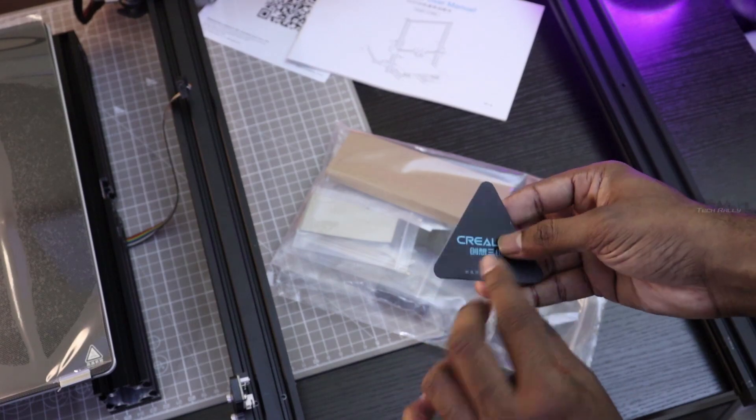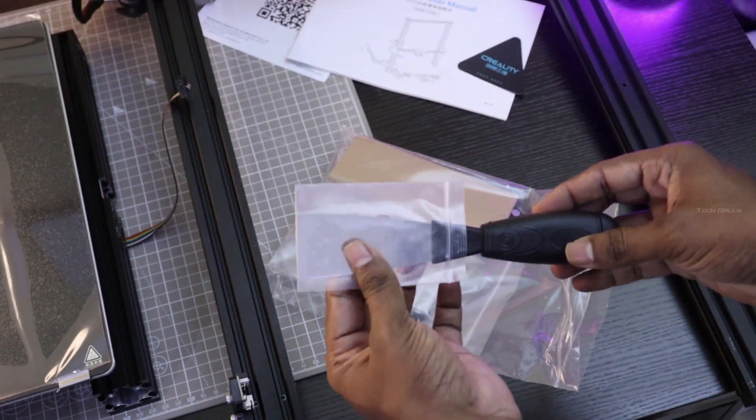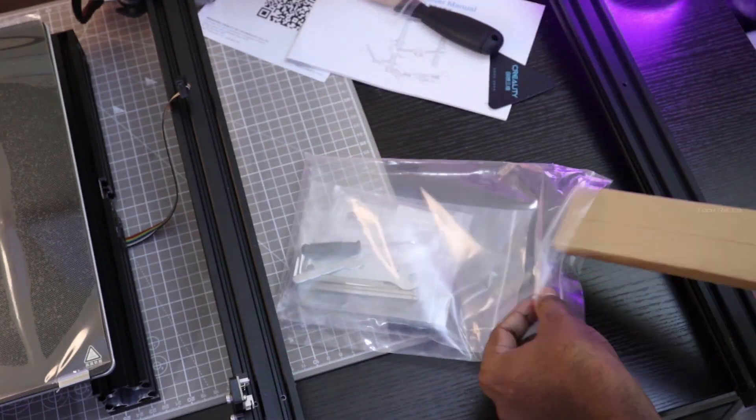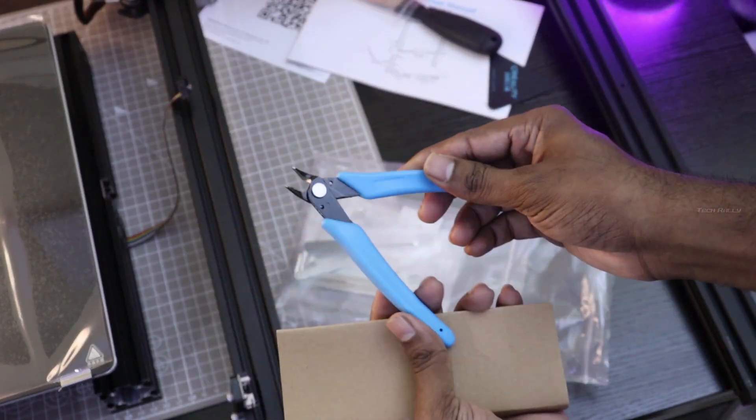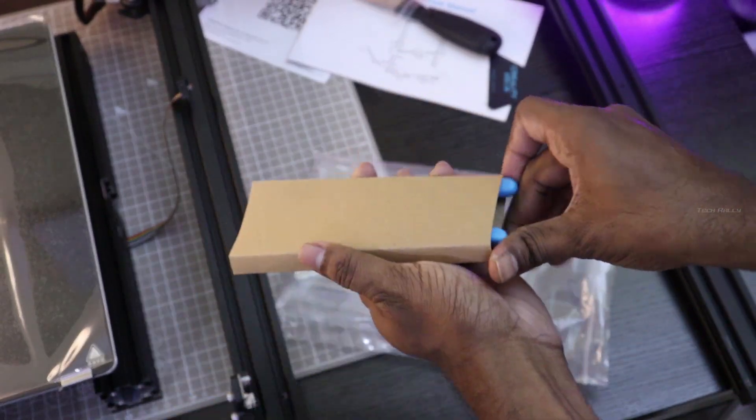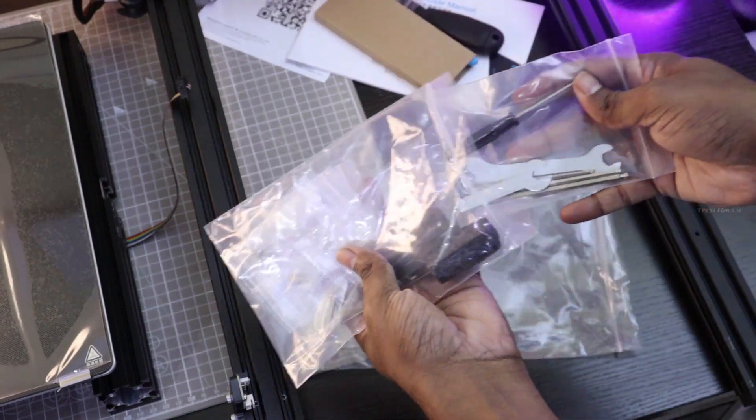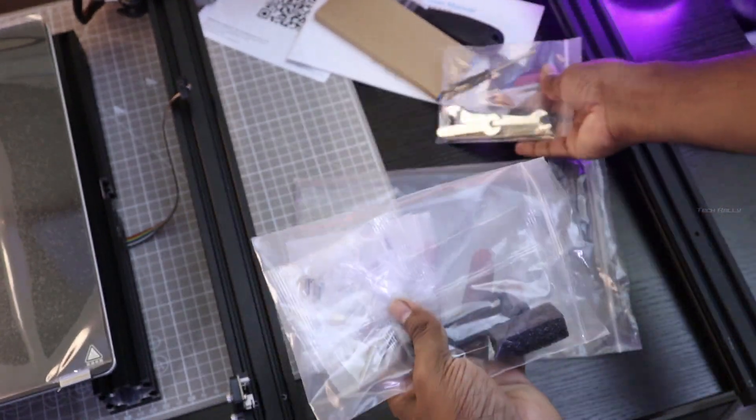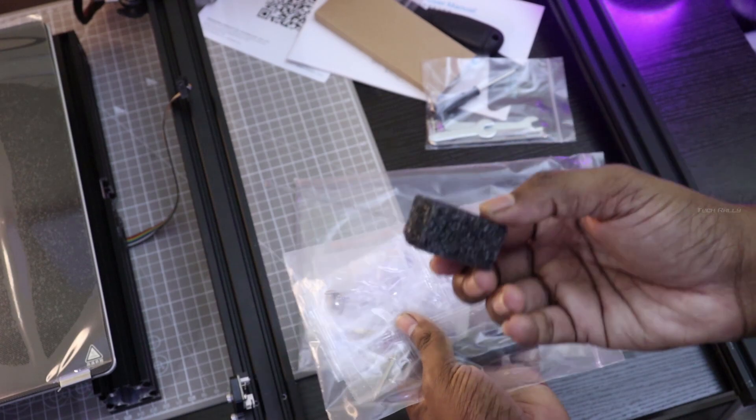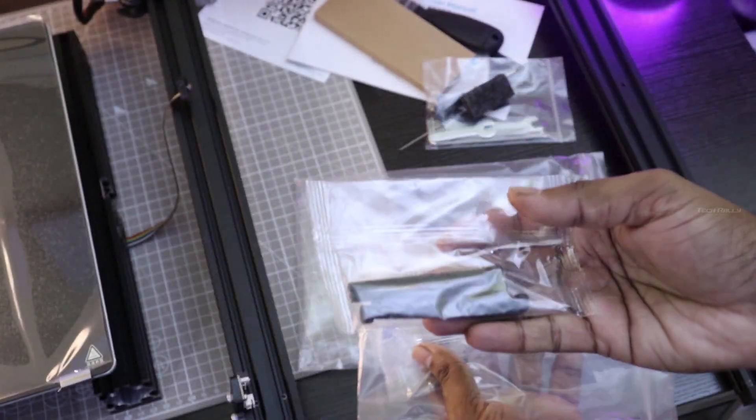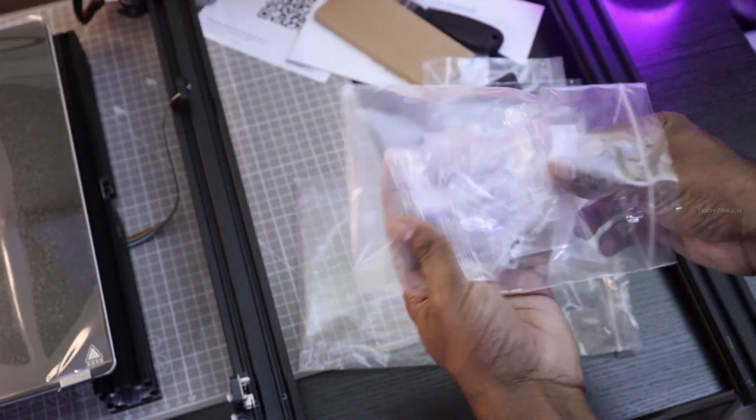Inside this pack, we have the installation guide and a scraper, a cutter, some tools for installation and maintenance. It also comes with a nozzle cleaner, allen bolts and one additional nozzle, and an 8GB memory card with a card reader.